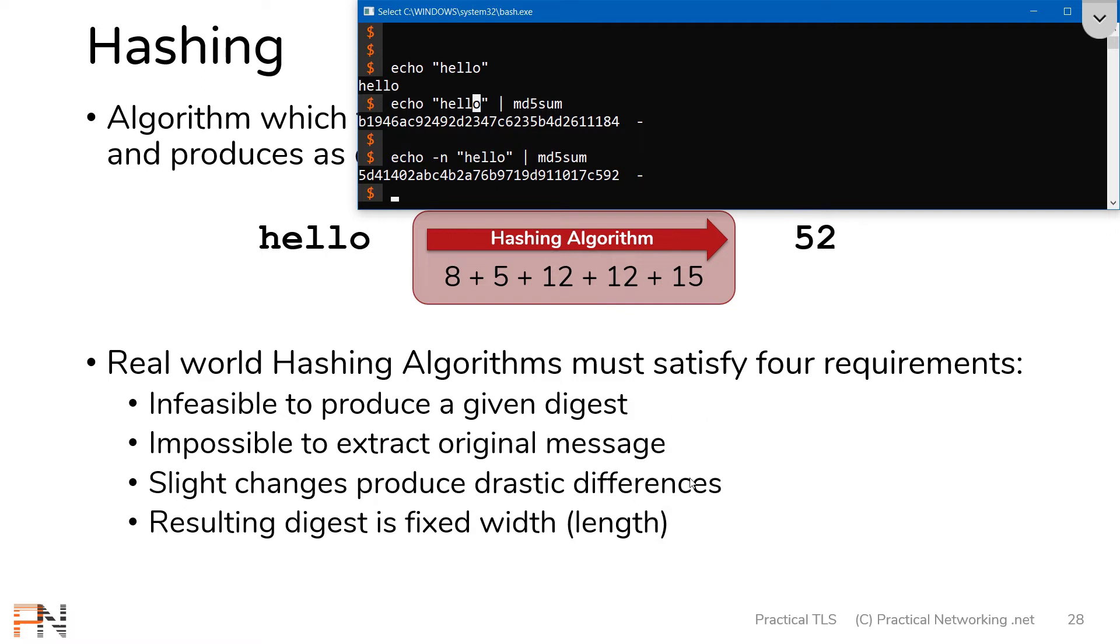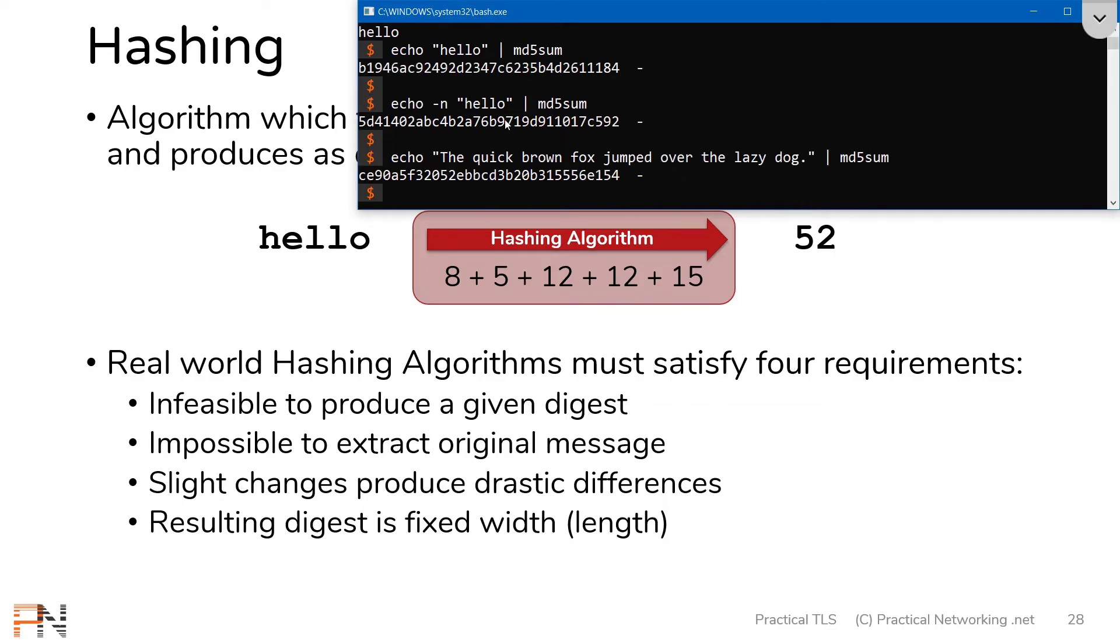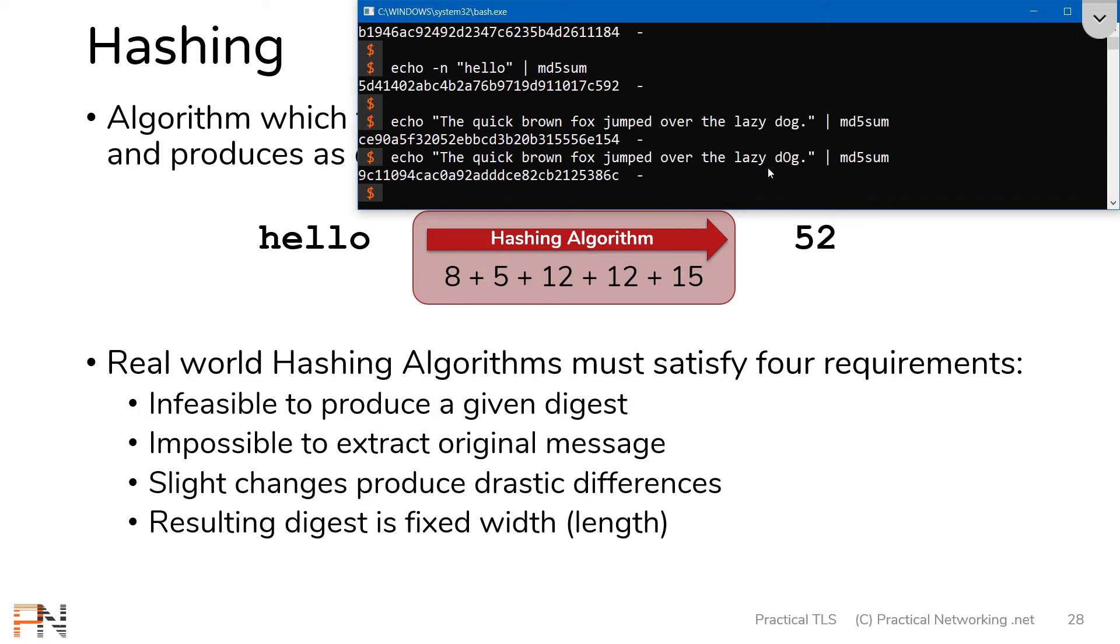Now, for this next one, I'm going to create a longer hash. I'm going to echo the string the quick brown fox jumped over the lazy dog to the MD5 utility. Notice, whether I hashed five letters with a newline character, five letters by themselves, or a whole sentence, no matter what, the resulting digest was still the same length. That's actually kind of an example of this last one, the resulting digest is fixed width. Now, if I take this last sentence and I make a very small change, let's just capitalize this letter in the middle of the word dog, you'll notice the resulting digest is extremely different. That's this slight change produced drastic differences.